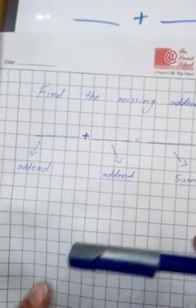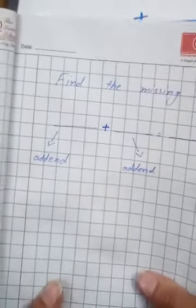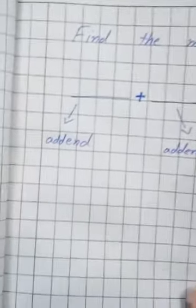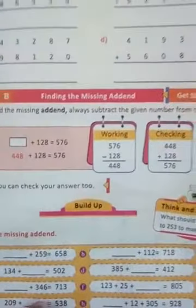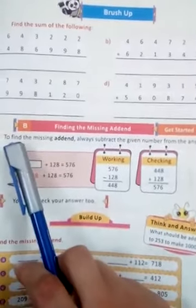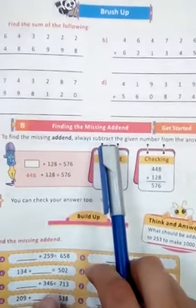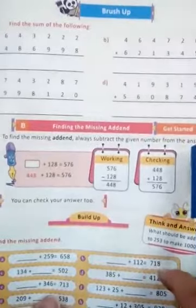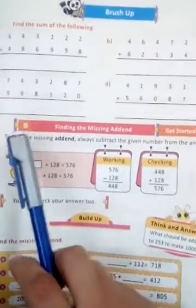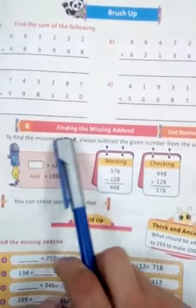Now I'm going to tell you about the method: how we find the missing addend in our addition sums. This is the definition on page number 16. Finding the missing addend: to find the missing addend, always subtract the given number from the answer. This is the main thing which you have to learn. Also underline that. You have to underline that line to understand the concept.